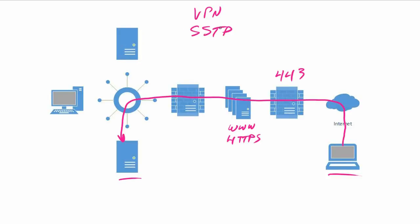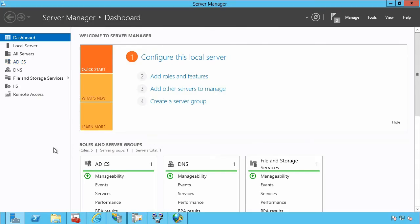SSTP uses port 443 the same way you would when connecting to a secure web server, so you don't have to open any additional ports on your firewall. You'll have another server acting as your RAS server. Once you connect to the RAS server via VPN, you can then connect to your internal network, file server, or any other resources throughout your organization. The rest of this micro nugget shows how to actually do this — I've set it all up in advance.